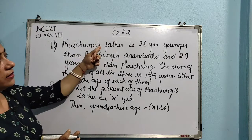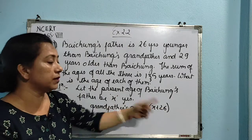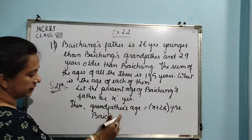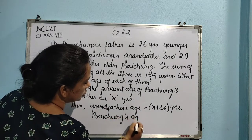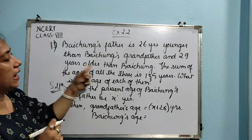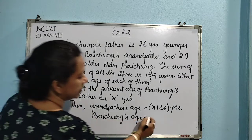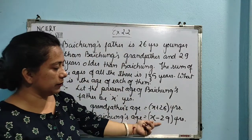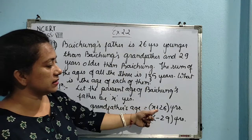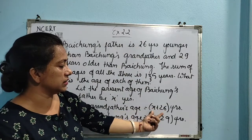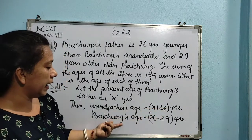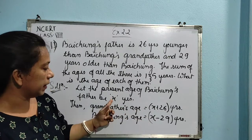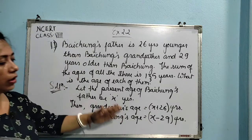Grandfather's age is x plus 26 years. Now Bai Chung's age: since Bai Chung's father is 29 years older than Bai Chung, Bai Chung's age will be x minus 29. So grandfather is 26 years senior to the father, and Bai Chung's age is 29 years lesser than his father. These are the present ages of all three people.